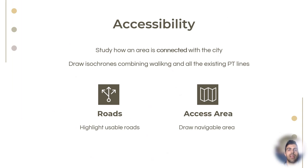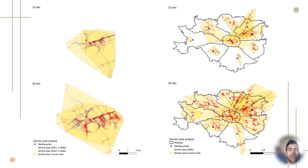The accessibility analysis aims to show how an area is connected with the rest of the city via public transportation, drawing isochrons by combining walking with all existing public transportation lines. For both cases, the analysis was tested on two time thresholds: 15 and 30 minutes.